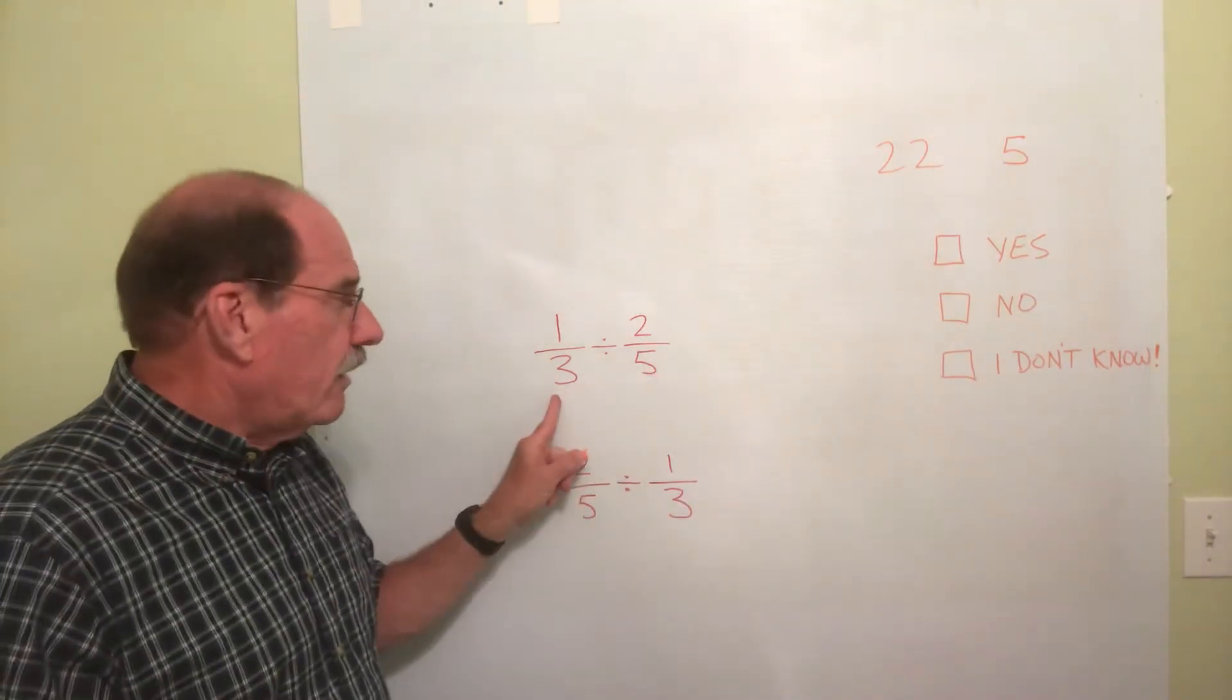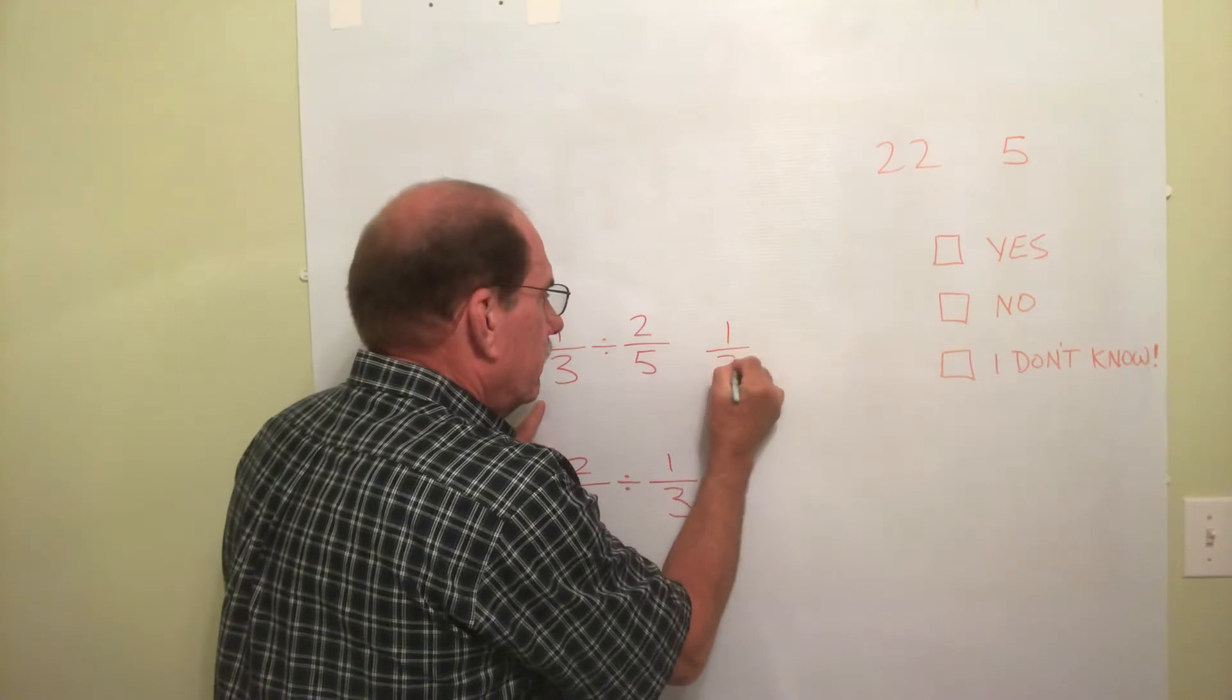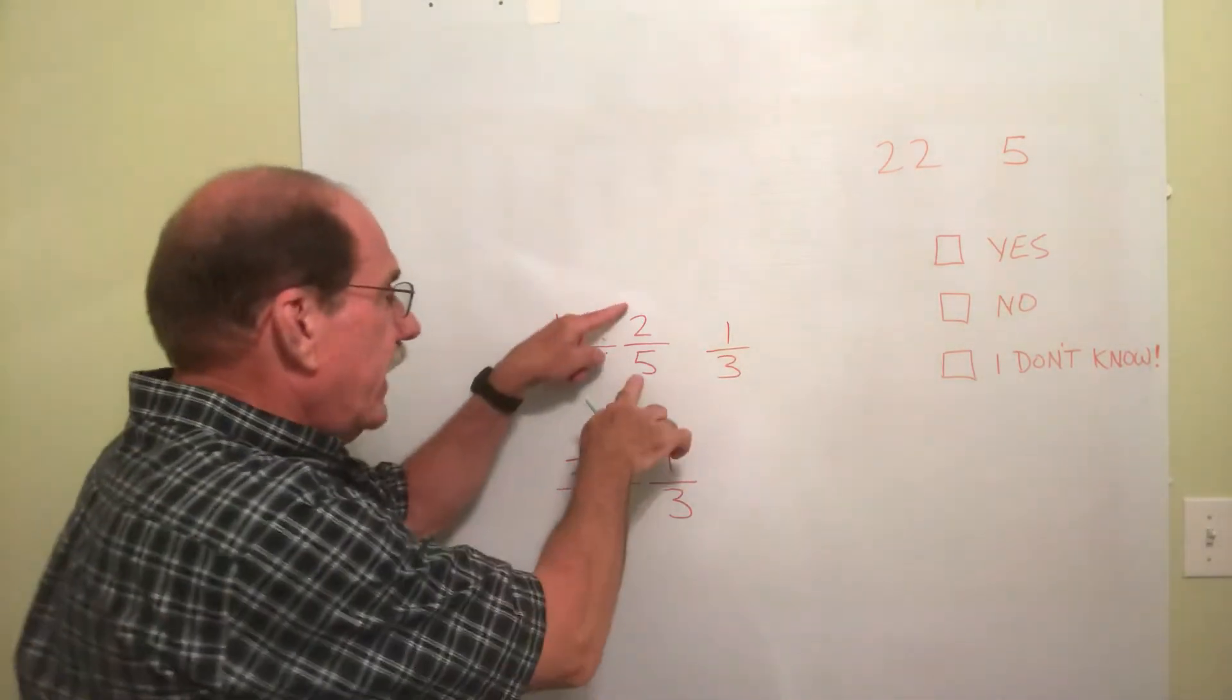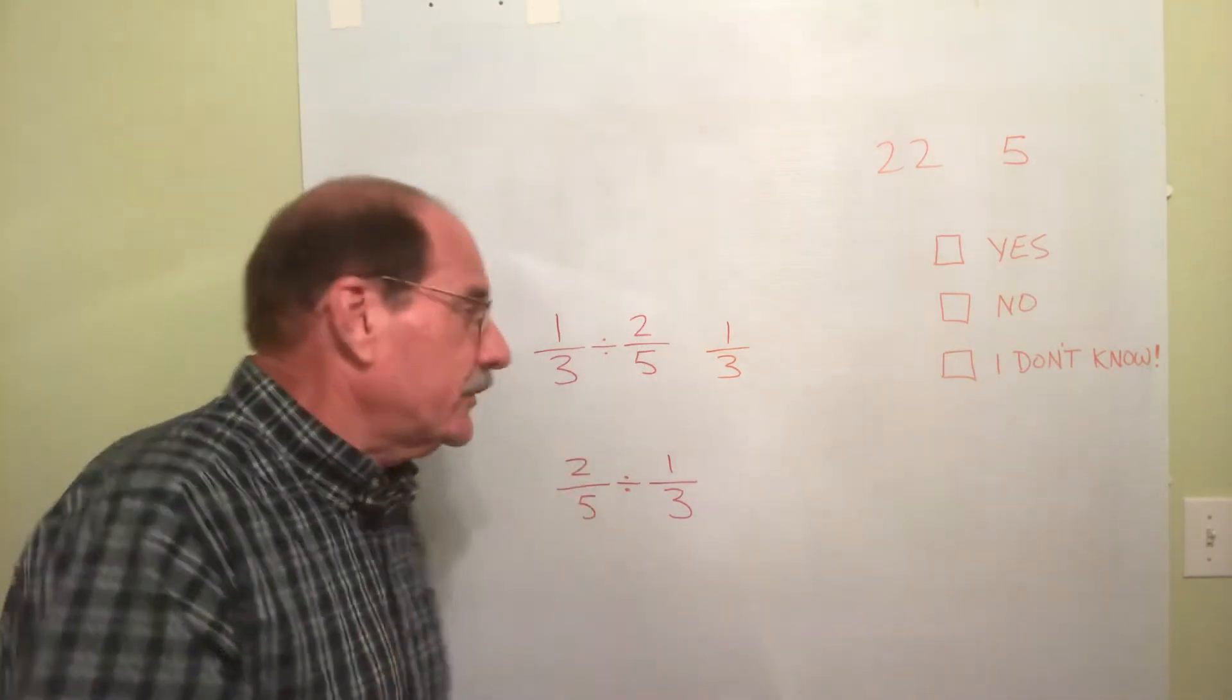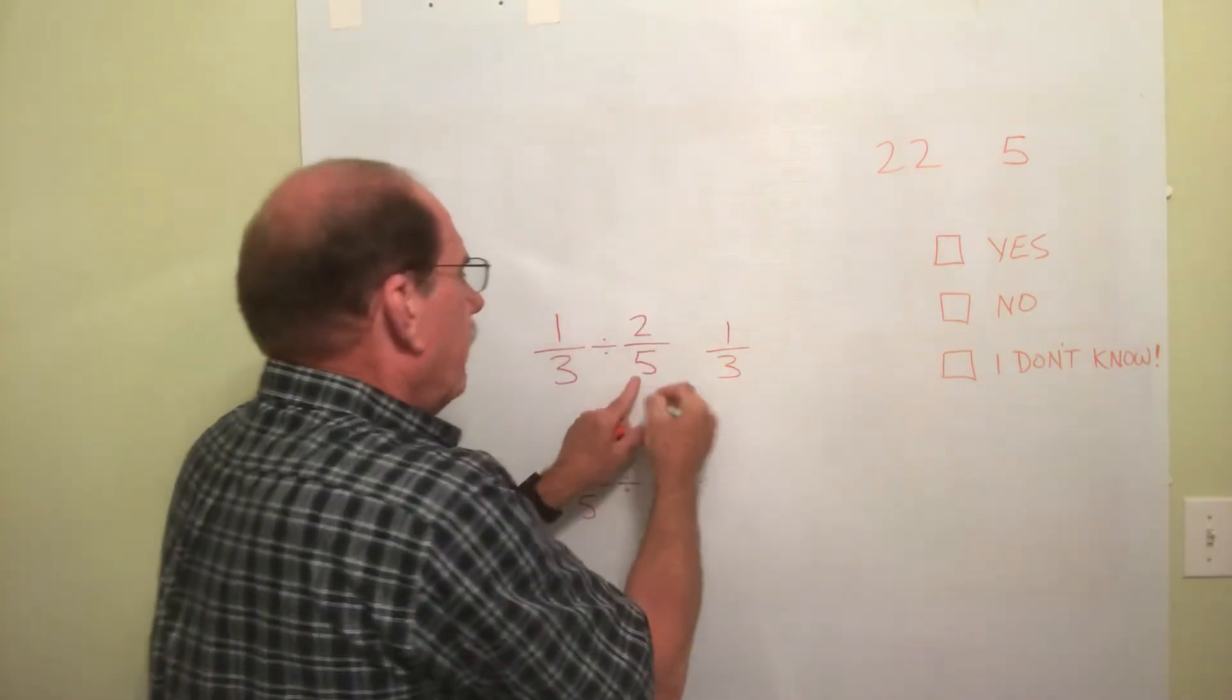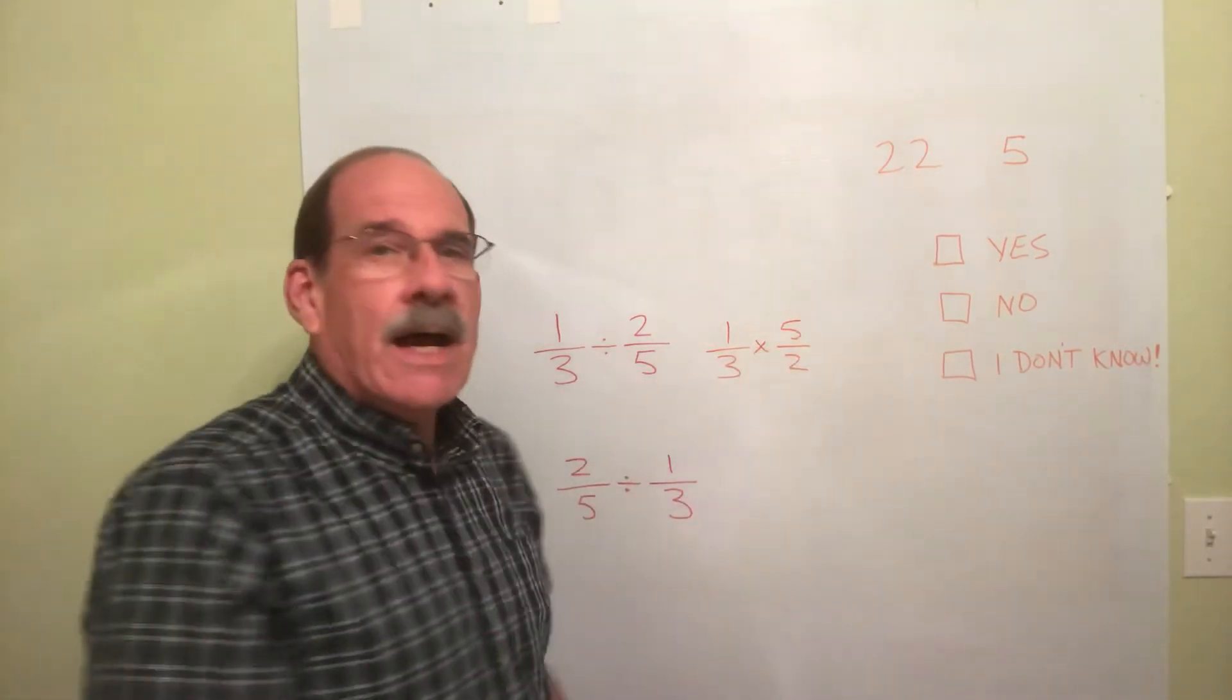When you divide, the first number, you leave it alone. I'm going to rewrite this. The first number, I don't mess with it. Leave it just like it is. But now, the second number, I flip it upside down. You can call that the reciprocal, the inverse, whatever it is. The flipped over version thereof. I flip it over and put now 5 on top and 2 on the bottom. But now, I multiply.